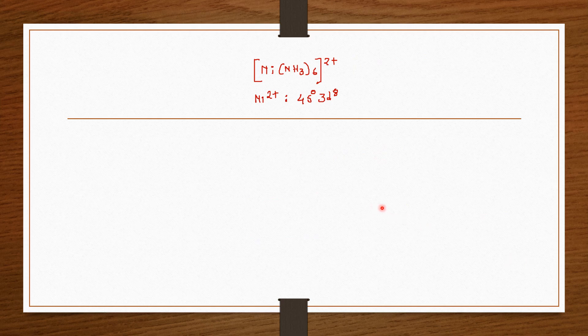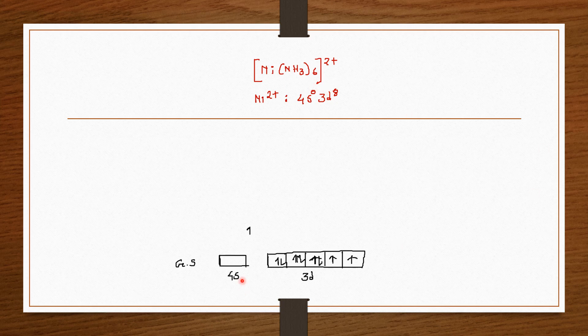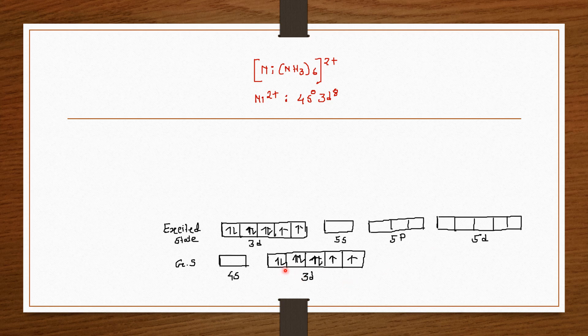Now I am going to explain the hybridization model of [Ni(NH3)6]2+ using valence bond theory. In the ground state nickel +2 is 4s0 and 3d8. Here 3 paired electrons and 2 unpaired electrons.